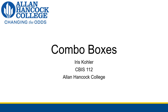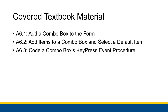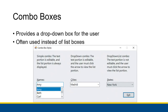I wanted to make a quick video on combo boxes, sort of like what I did for list boxes previously. I'm not going to go super into detail, so you should look at the Apply the Concepts sections of the textbook for this, but I want to at least give you the basics, covering 6.1, 6.2, and 6.3. Combo boxes provide a drop-down box for the user, and they're often used instead of list boxes. They are a lot cleaner and give you a lot more options.